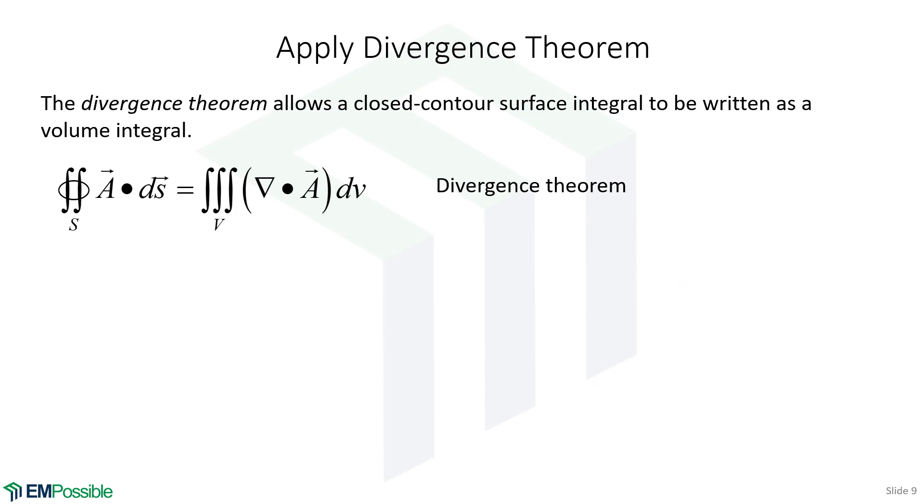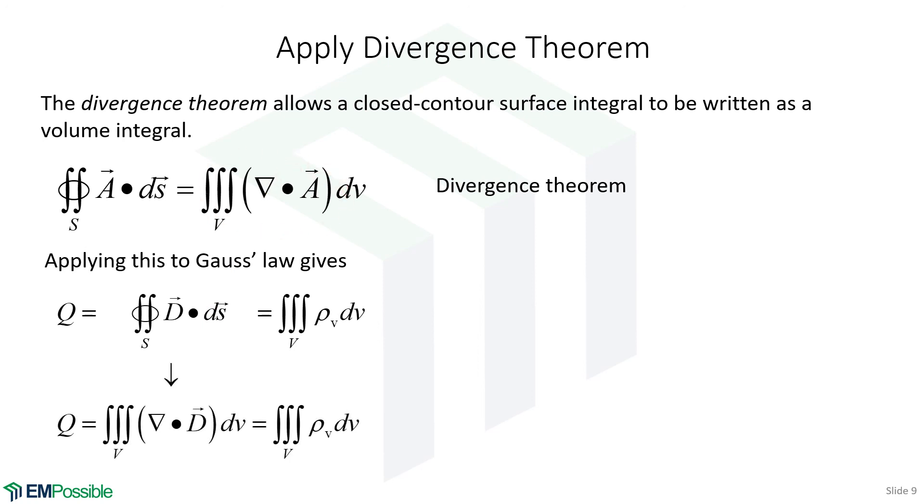Now let's derive Gauss's law in differential form. To do this, we're going to apply the divergence theorem. Let's quickly remember what the divergence theorem was. It's a way that we can convert a closed contour surface integration of flux into a volume integral of divergence. So here's Gauss's law, as we've written it up to this point, where we've set our two methods of calculating total enclosed charge. We can integrate flux over a closed contour surface, or we can integrate charge density throughout a volume. Well, here is a closed contour surface integration of flux, and we can use the divergence theorem to convert that to a volume integral of divergence. So that's exactly what we do.